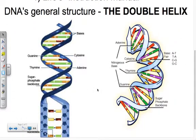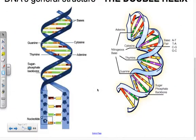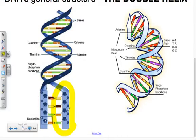DNA's general structure is that of a double helix. Here are two diagrams of DNA. We call it a double helix because it is double-stranded — this right here is considered to be one single strand, and then you see it coiling around; this would be another strand, hence double-stranded. The helix is a term used to refer to its shape, how it's spiraled. DNA is often referred to as a spiraling staircase or a twisted ladder-like figure.